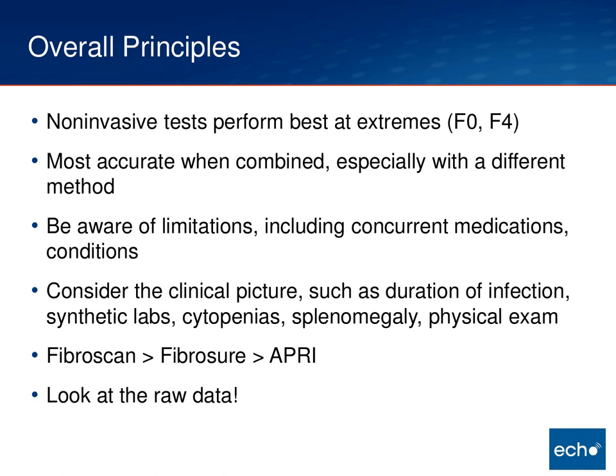A quick case: one of our providers on HCV echo had discordant lab results and said, 'The liver just feels hard and big.' Sure enough, we sent them down and they got a FibroScan showing F4. Sometimes physical exam can really be helpful — if we didn't have that physical exam finding, we would not have pushed so hard to get the FibroScan. In terms of accuracy, FibroScan is probably most accurate, followed by FibroSure, followed by the AST-to-platelet ratio. I also encourage you to look at the raw data when interpreting either the FibroSure or FibroScan.